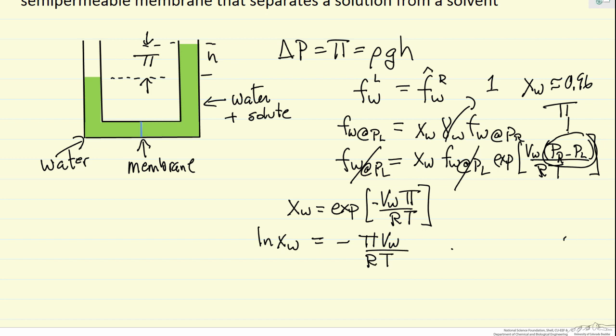Now we can make an approximation. Because the mole fraction of water is close to 1, a pretty good approximation is that the log of it is just the mole fraction minus 1. This approximation is very good when the mole fraction is close to 1. Also, the mole fraction of the solute plus the mole fraction of water equals 1, so this is minus the mole fraction of the solute.